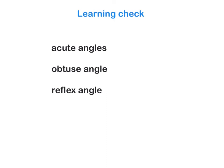For the learning check, I ask you to draw three different acute angles — remember they are less than 90 degrees, and they can range from very small to nearly 90. Also draw three different obtuse angles and three different reflex angles. See you tomorrow.